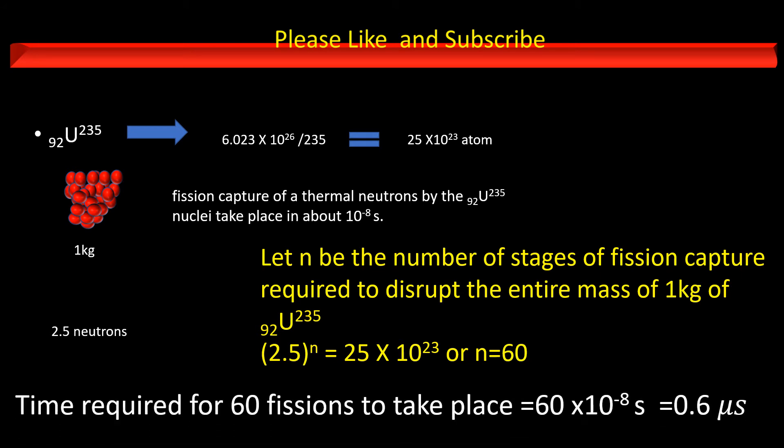Time required for 60 fissions to take place equals 60 × 10^-8 seconds, which is equal to 0.6 microseconds.